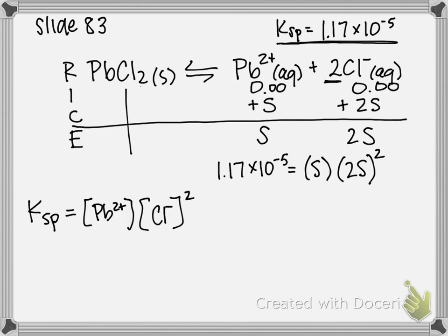So we can simplify that a little bit and say 1.17 times 10 to the negative 5 is equal to 4S cubed. If I distribute out this exponent 2, and then multiply that by the S, it ends up giving me 4S cubed.